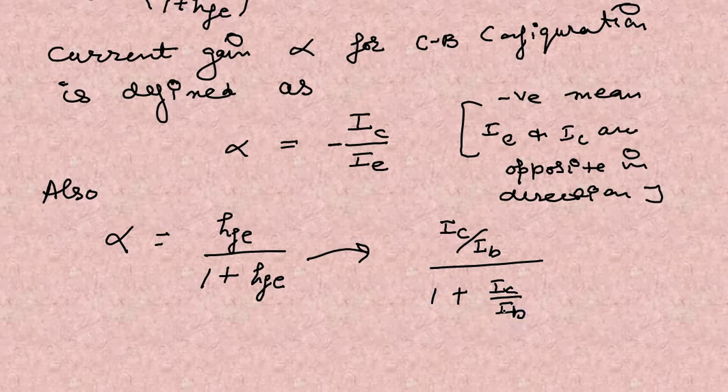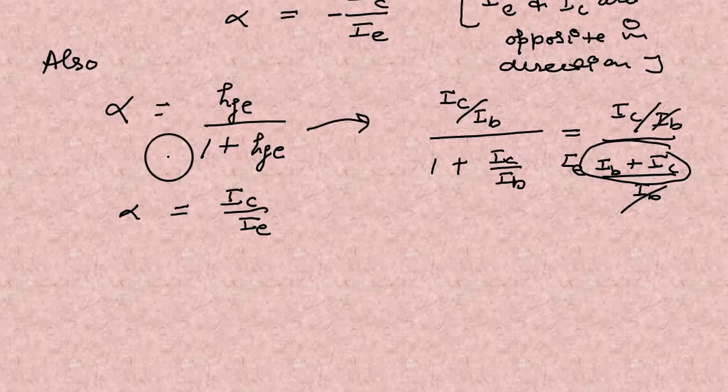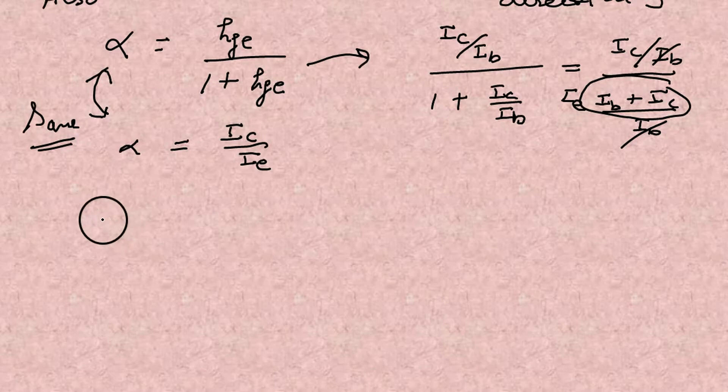HFE is forward current ratio in common emitter. Substituting the values here, and you got IB plus IC is IE. So it is, it becomes IC upon IE. That means both are the same and you can equate the two also. With a negative sign, it is not written here, but it should come. Alpha is equals to minus IC upon IE.